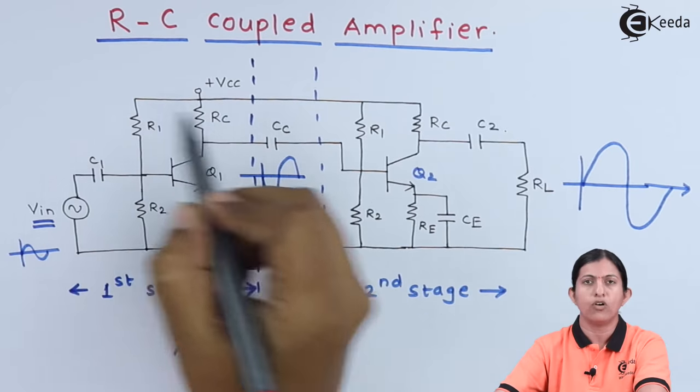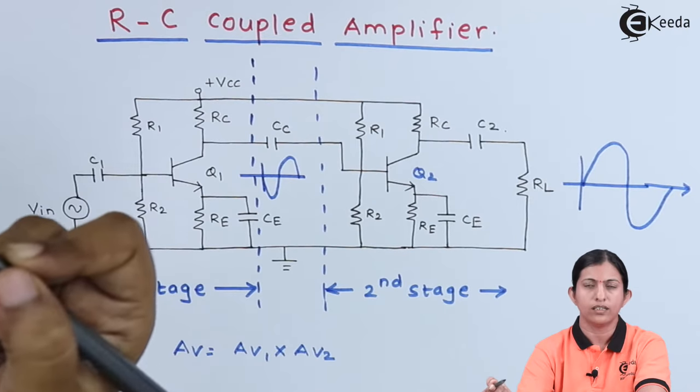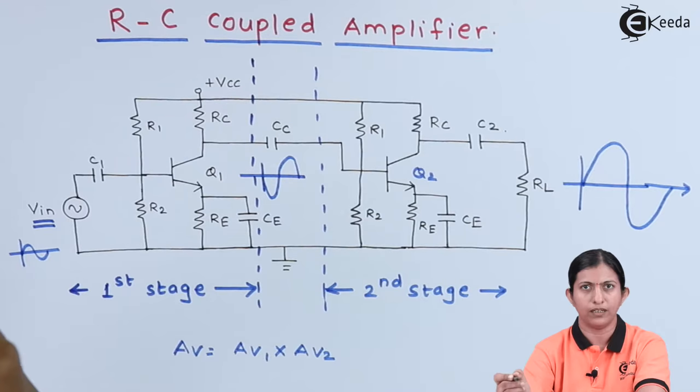This is the diagram of an RC coupled amplifier. When we are connecting more than two stages, there are three types of coupling: one is RC coupling, the second is transformer coupling, and direct coupling.